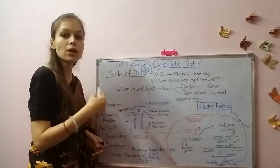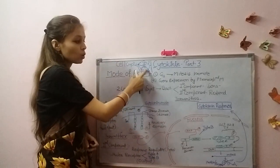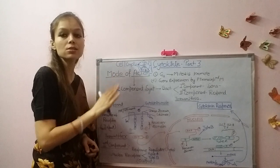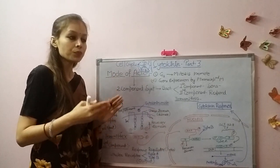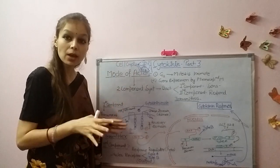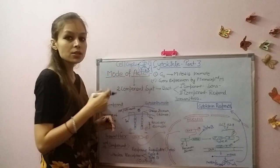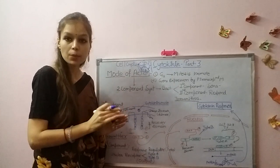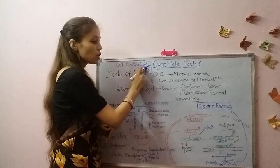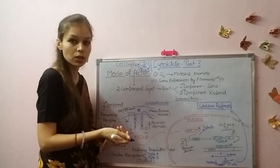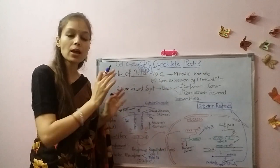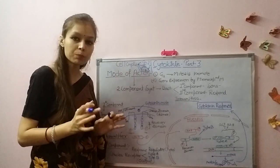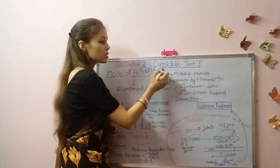G2 to M transition means promoting mitosis or meiosis. In the S phase, DNA replicates to double the DNA content. In G2, the cell checks that replication was done correctly without mistakes. Cytokinin gives the signal to proceed from G2, allowing the cell to divide and establish daughter cells.